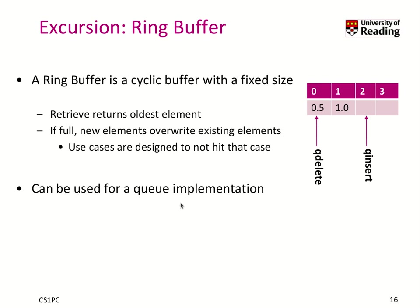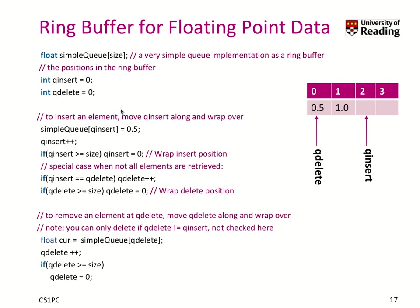It can be used for a very lightweight queue implementation, which is what we will be doing. Here is a little example with a floating point data type, where we create a ring buffer of size four. We have to create two pointers — one pointer is where we are inserting, and one pointer is where we are deleting or retrieving the elements.